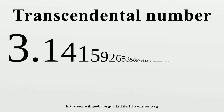The transcendence of π allowed the proof of the impossibility of several ancient geometric constructions involving compass and straight edge, including the most famous one, squaring the circle. In 1900, David Hilbert posed an influential question about transcendental numbers.